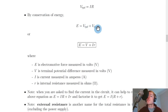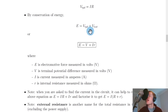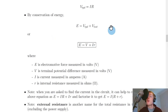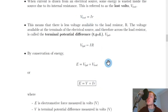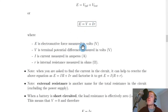By conservation of energy, the EMF E equals the terminal potential difference plus the lost volts. For example, if EMF E = 1.5 V and lost volts = 0.3 V, then terminal potential difference = 1.2 V. Rewriting, we get the key equation: E = V + ir, where E is EMF in volts, V is terminal potential difference in volts, i is current in amperes, and r is internal resistance in ohms.